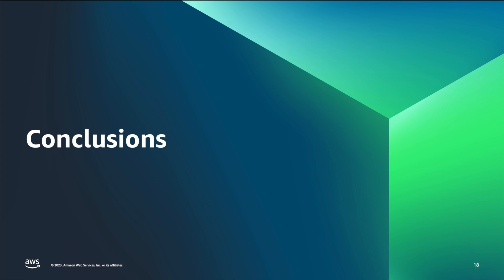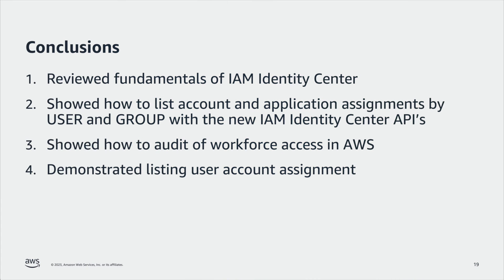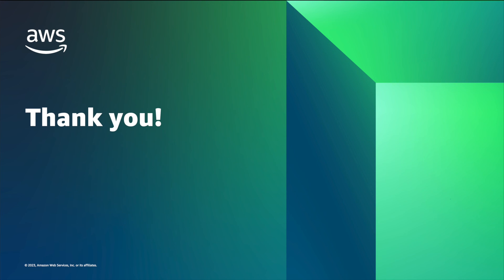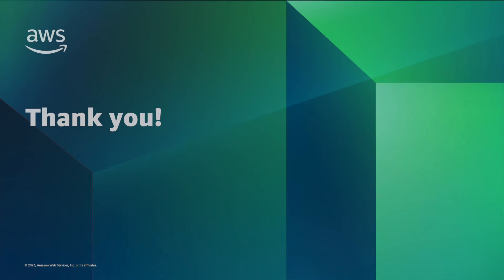Let's review what we've gone over. We've reviewed some fundamentals of IAM Identity Center. We saw the new IAM Identity Center APIs that allow you to list account and application assignments by user and group types. We saw how this helps with auditing workforce account assignments in AWS. And we saw a demonstration of using the new APIs to list account assignments for a particular user. Thank you so much for your time and attention. I hope you've learned something valuable, and happy building on AWS.